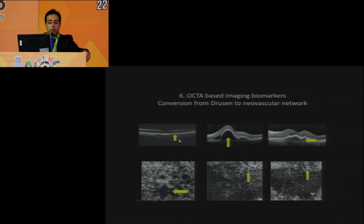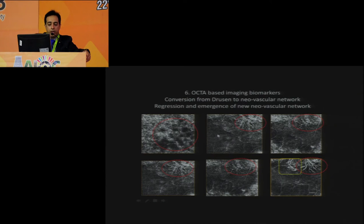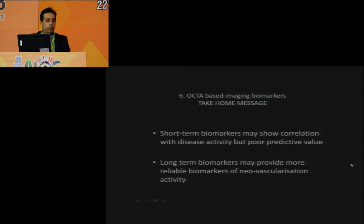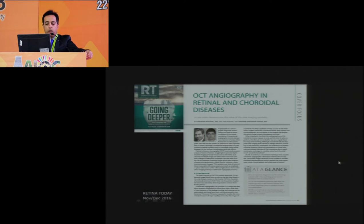A patient example showed bumpy excrescences near the pigment epithelium on OCT, with dark spots on OCTA. The untreated eye developed a PED with fluid and vascular changes, which partially regressed after anti-VEGF, but recurred. Short-term biomarkers may show correlation with disease activity but have poor predictive value, while long-term biomarkers may provide more reliable indicators of neovascularization activity.